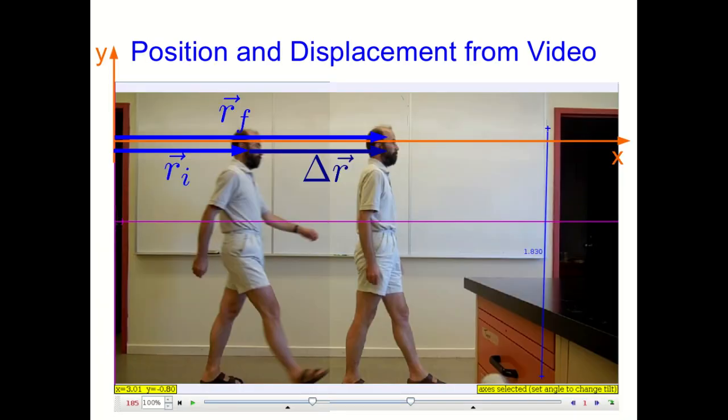So let's see this with my motion across the room that we've been looking at as an example. I've superimposed two images so that you can see the initial and final position, and I've drawn in the displacement vector between them.